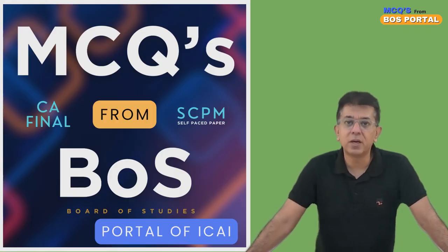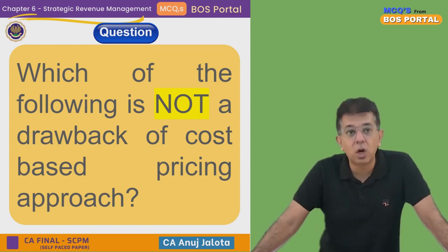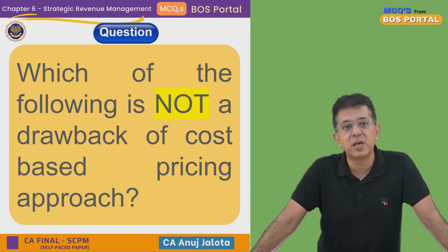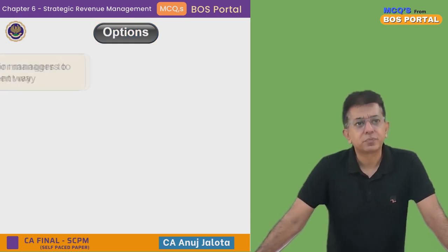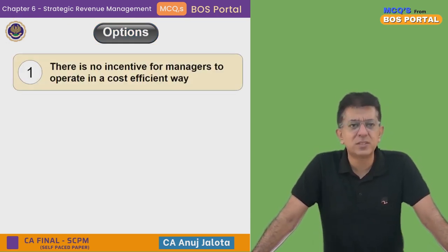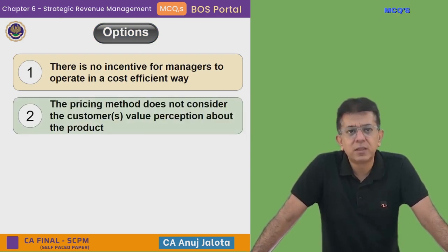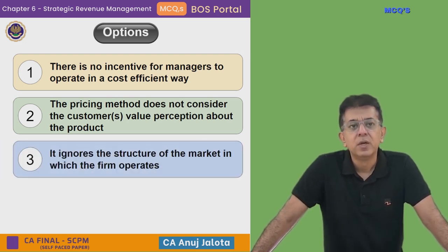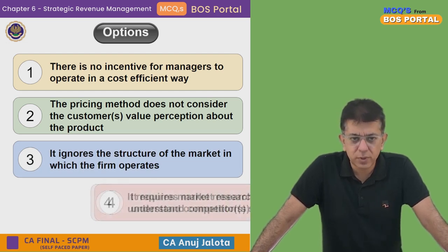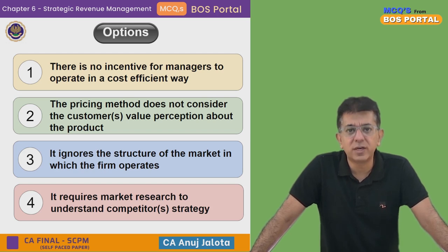Let's start. It's Chapter 6, all about decision making and relevant costing. Which one of the following is NOT a drawback of the cost-plus pricing approach? Option 1: There is no incentive for managers to operate in a cost-effective way. Option 2: The pricing method does not consider the customer's value perception about the product. Option 3: It ignores the structure of the market in which the firm operates. Option 4: It requires market research to understand competitor strategy.